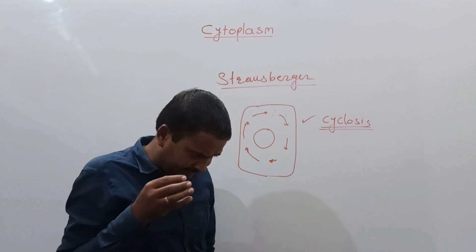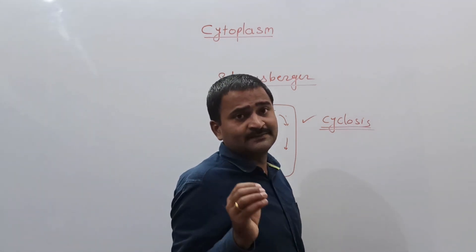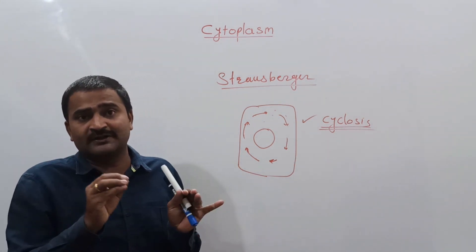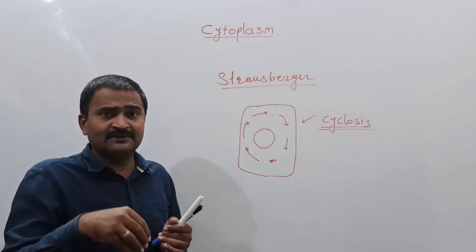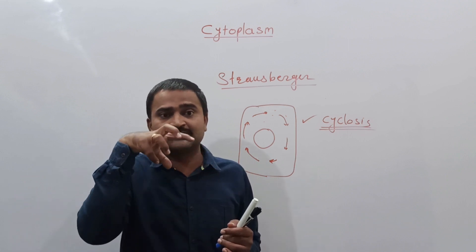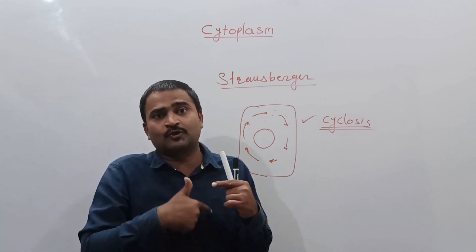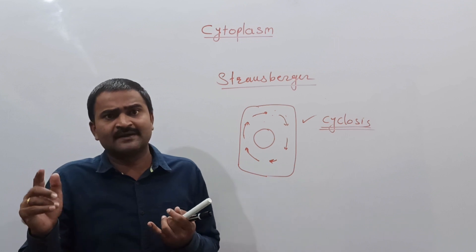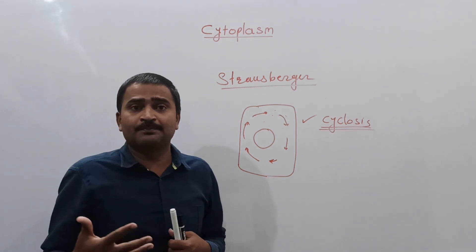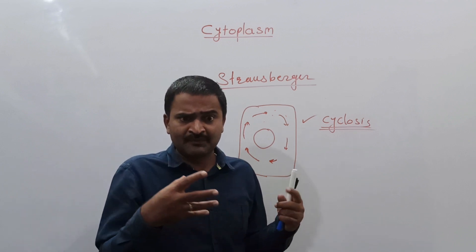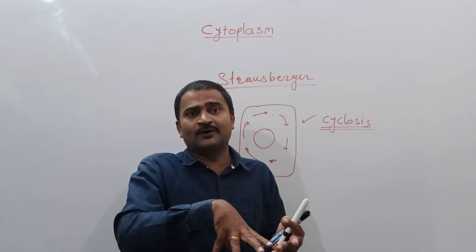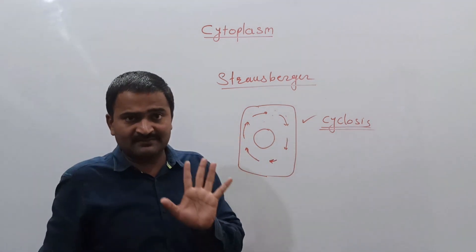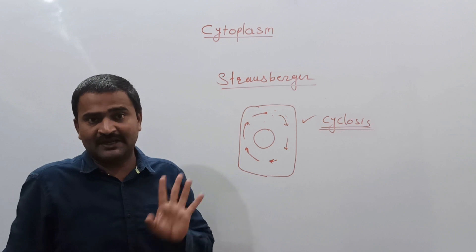The cytoplasm contains water and various types of organic and inorganic substances dissolved in that water. It contains dissolved carbohydrates, some proteins, amino acids, different types of minerals, ions, salt, etc. This mixture dissolved in water, present between the nuclear membrane and the cell membrane, is what we call the cell cytoplasm.